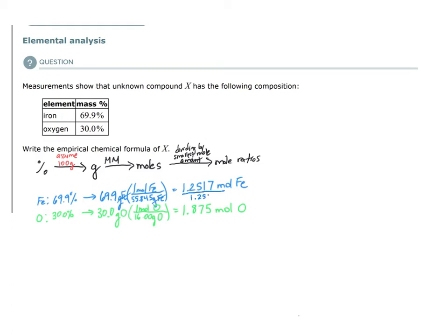If I divide both of these values by the smallest mole amount, what it does is it sets this one to 1. Every other element present is going to be present in some amount either equal to or greater than this amount.